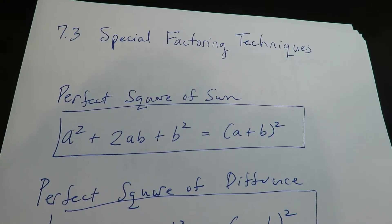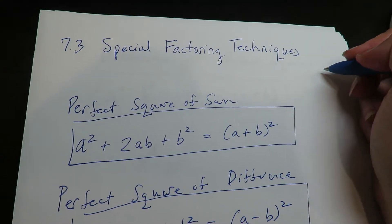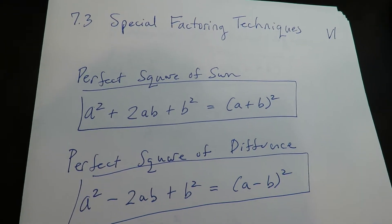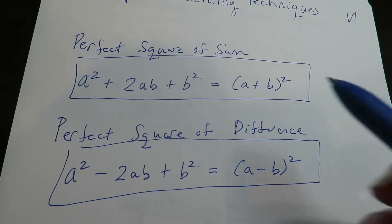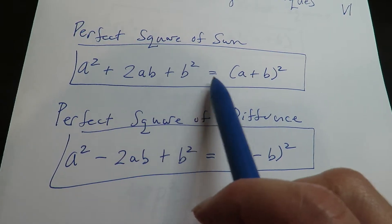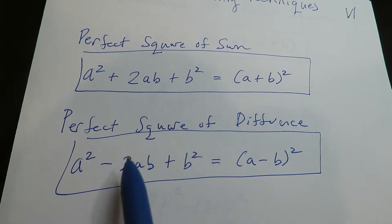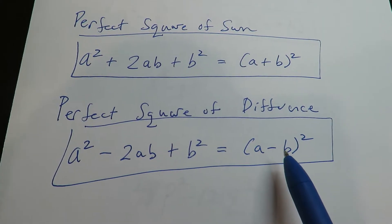Okay gang, this is 7.3, special factoring techniques. So if you have a perfect square of sum, this will factor into this. If you have a perfect square of difference, this combination factors into this.